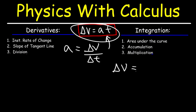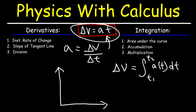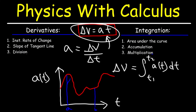The change in velocity will be the integral of the acceleration function — where A depends on T — from T1 to T2, from an initial to a final time point. If we have a graph with acceleration on the y-axis and time on the x-axis, and acceleration is a variable, we can calculate the change in velocity from T1 to T2 by finding the area under the curve.